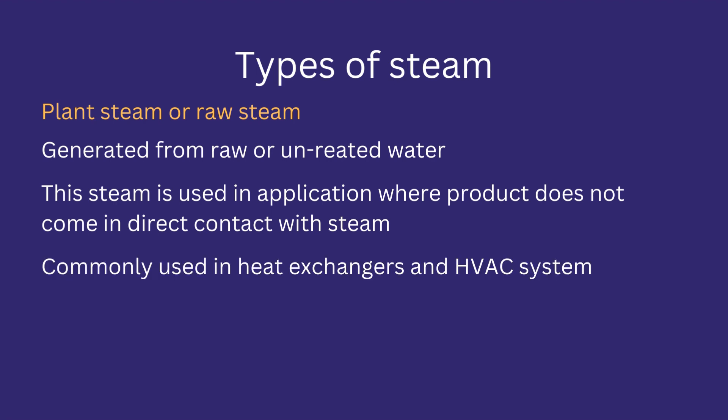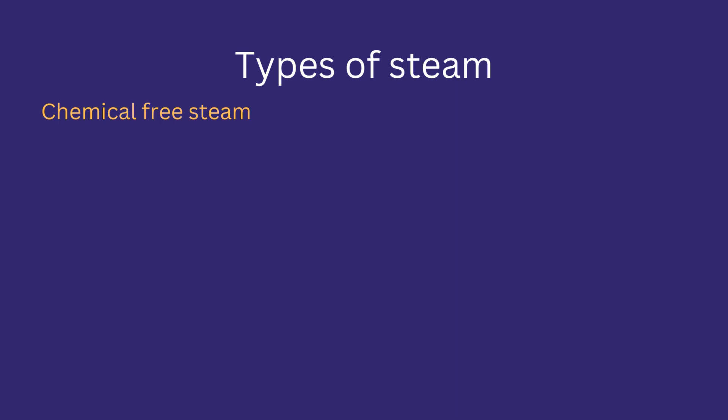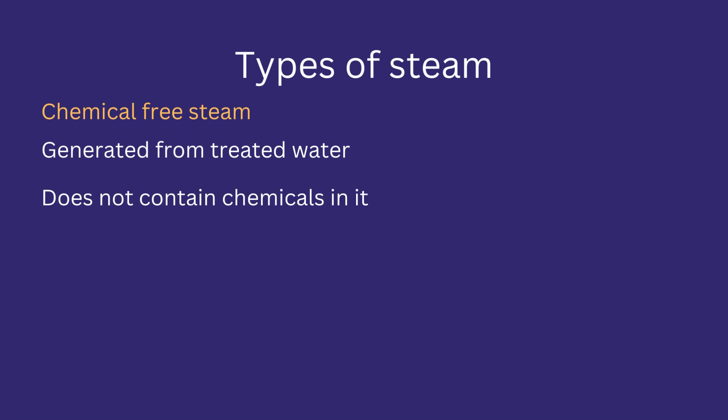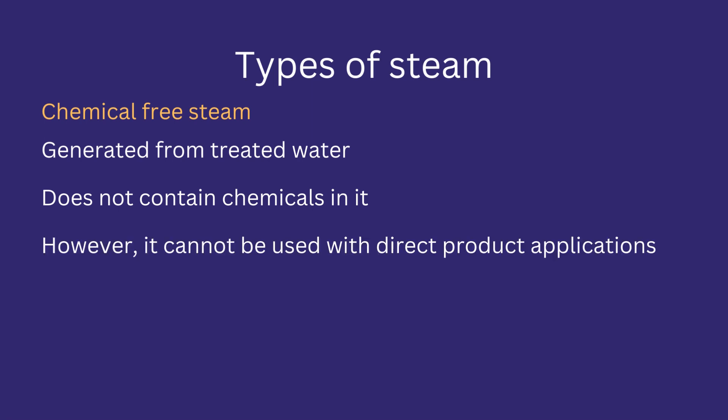Since plant steam cannot be used for critical applications, it can only be used for heat exchangers and HVAC systems. Chemical-free steam is generated from feed water that is free from chemicals and is treated before being fed to the boiler. However, chemical-free steam is not a pharma-grade standard and cannot be used for critical applications.